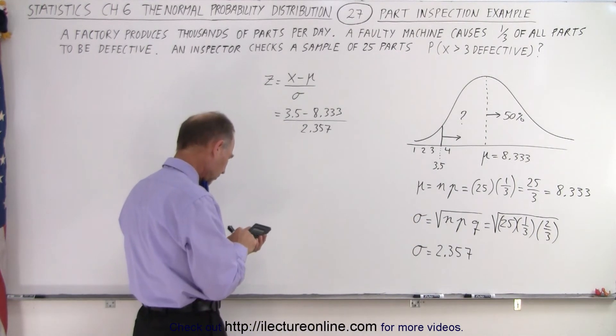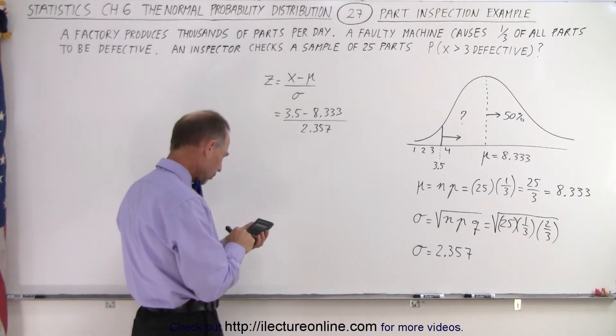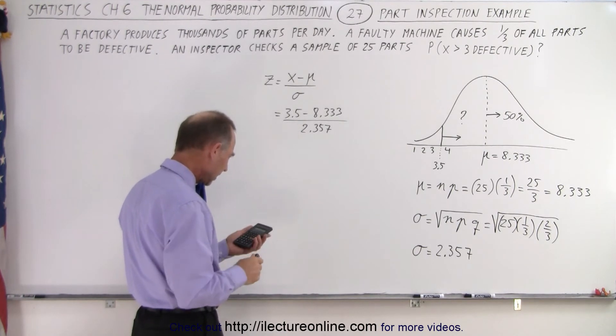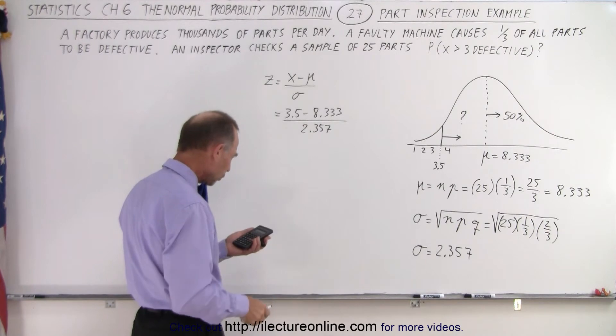And so we get 3.5 minus 8.333 divided by 2.357, and we get negative 2.05.